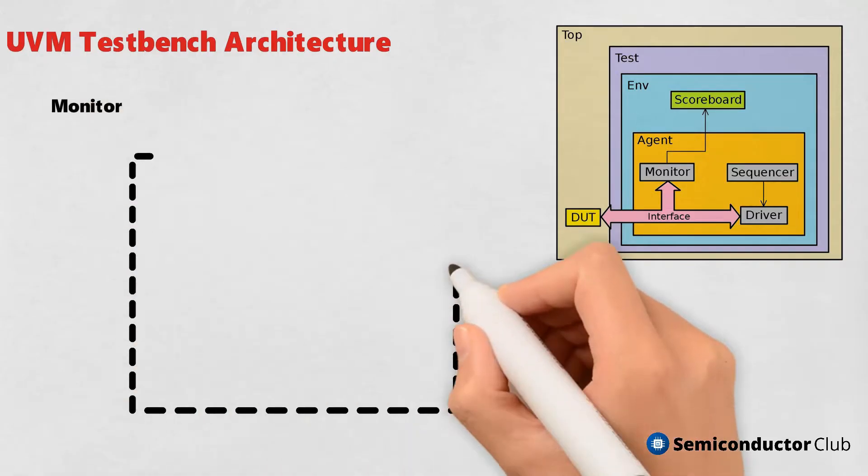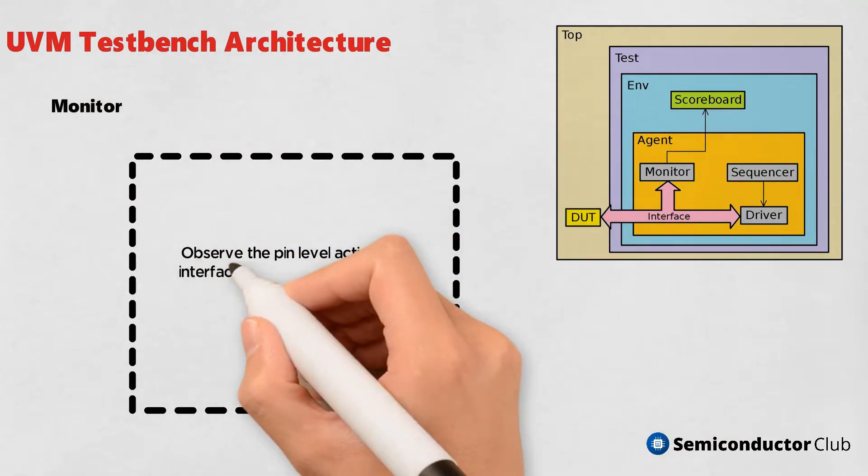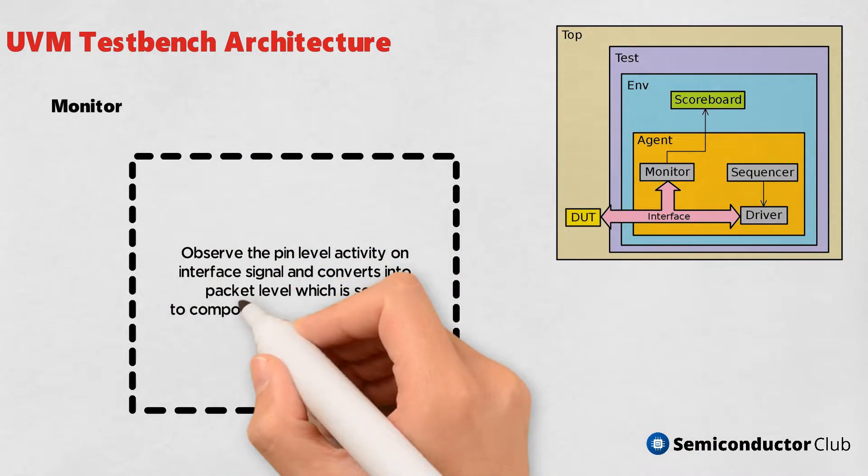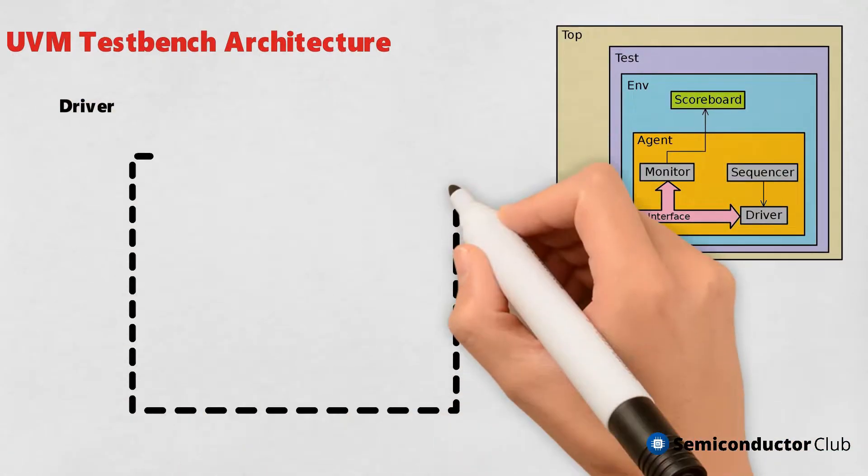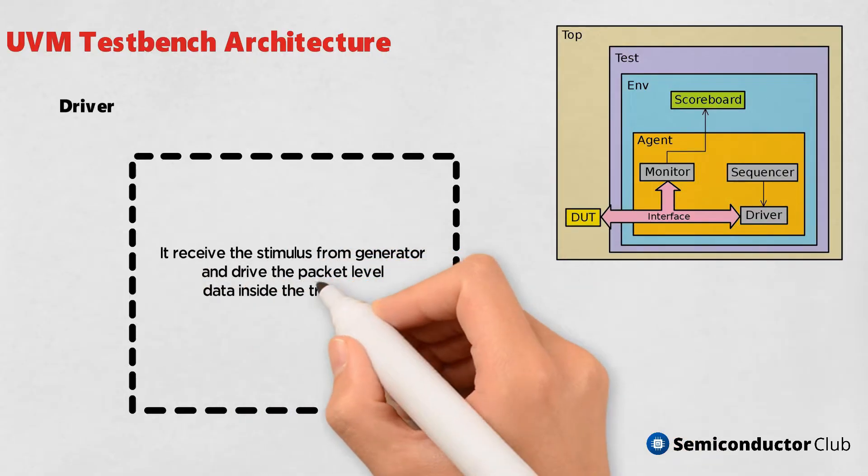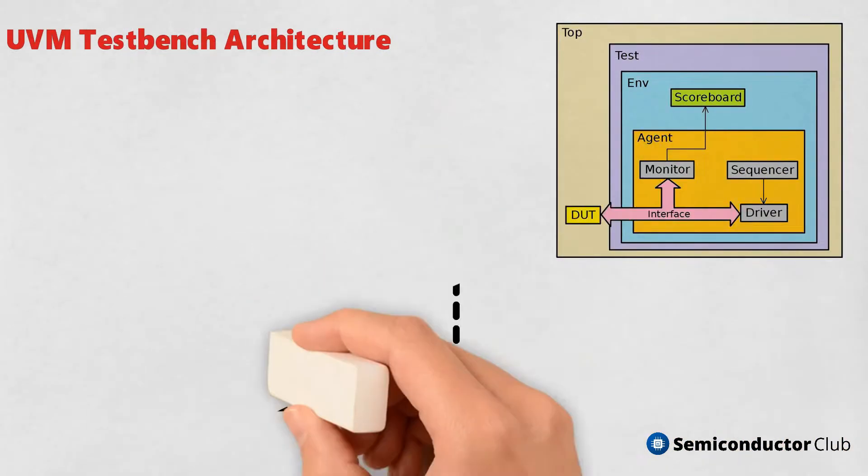Monitor: observe the pin level activity on interface signal and converts into packet level which is sent to components such as scoreboard. Driver: it receives the stimulus from generator and drives the packet level data inside the transaction into pin level to DUT.